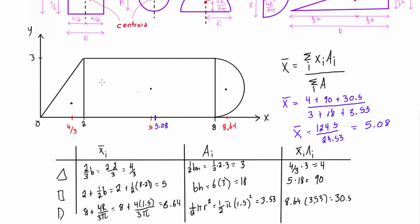We could also find the y̅ of this shape, but we'll skip that for now. In statics, what's often important is finding where a distributed load acts on a beam, so the x-location is usually the key concern. The process is: break the composite shape into simple shapes, find the x̄ and area of each, apply the formula, and that gives you the centroid location along the x-axis.